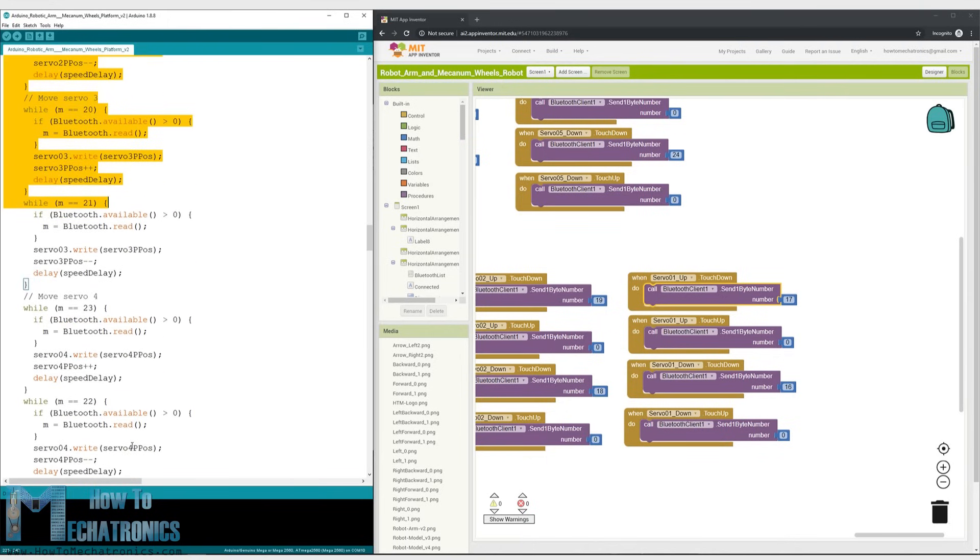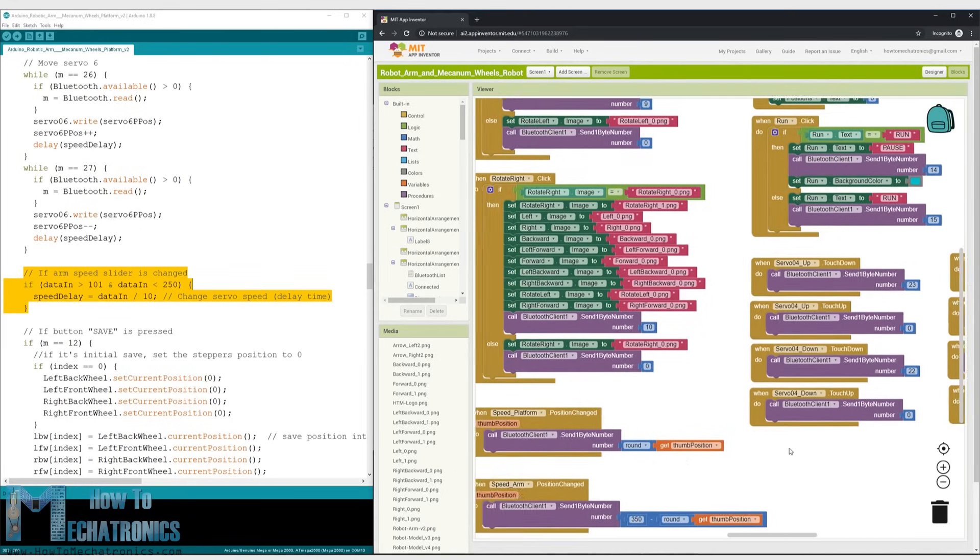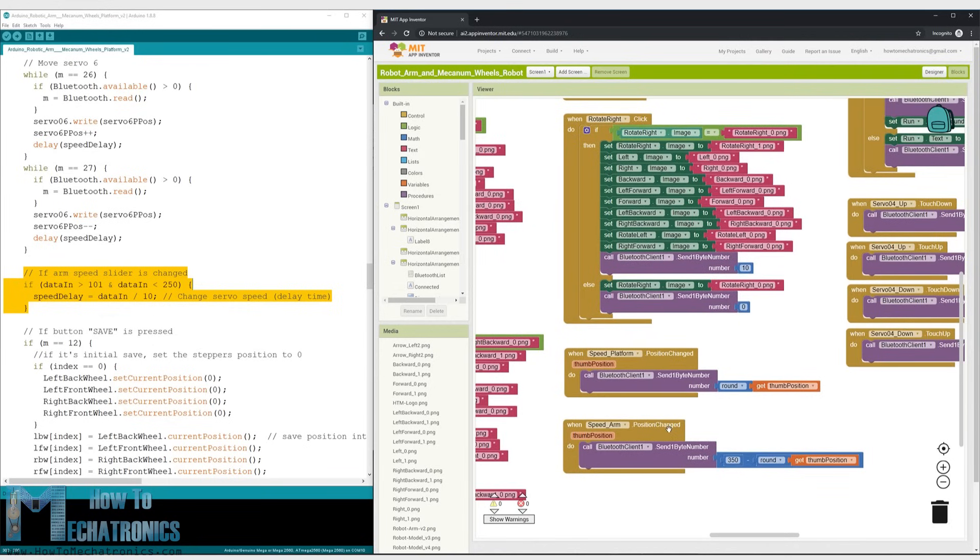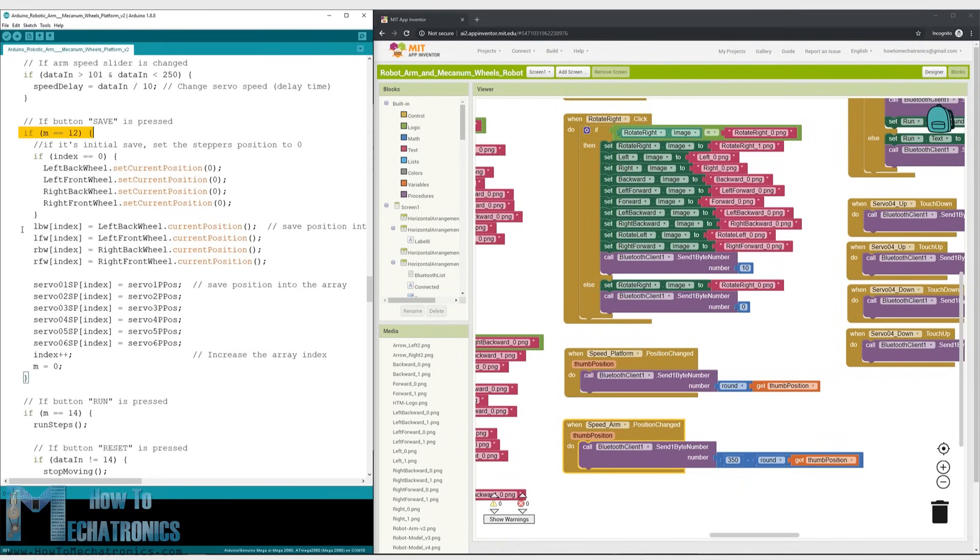For changing the speed of movement we use the values coming from the slider which range from 100 to 250. By dividing them by 10 we get values from 10 to 25 which are used as delay in microseconds in the while loops for driving the servos. For storing the robot movements we simply save the current positions of the servos and the steppers into arrays each time the save button is clicked.